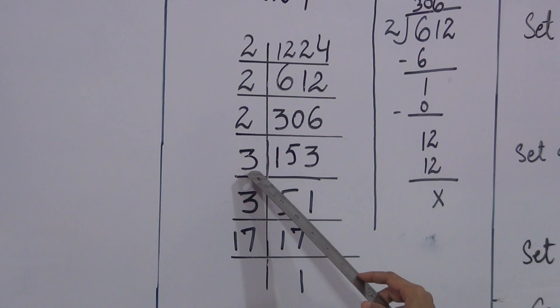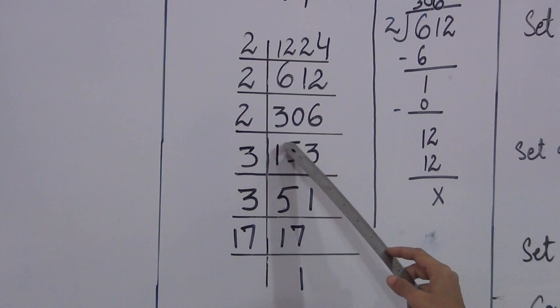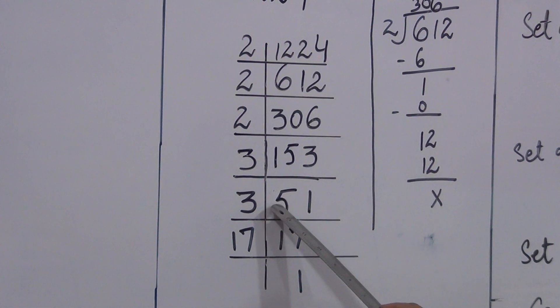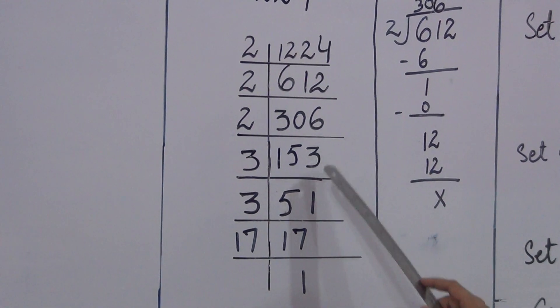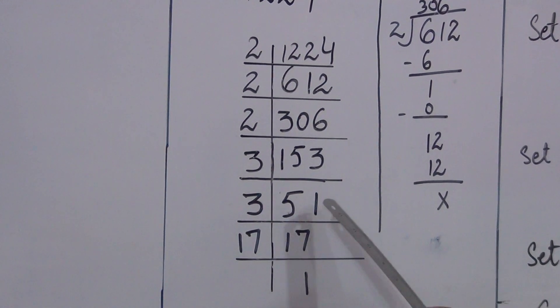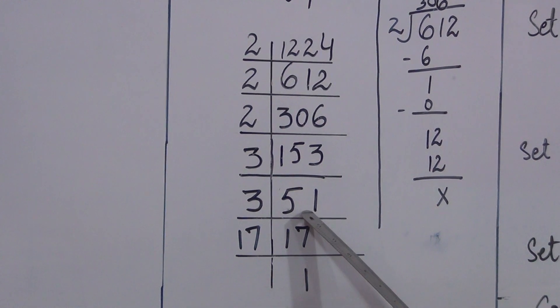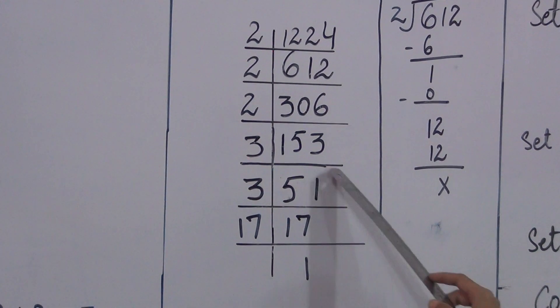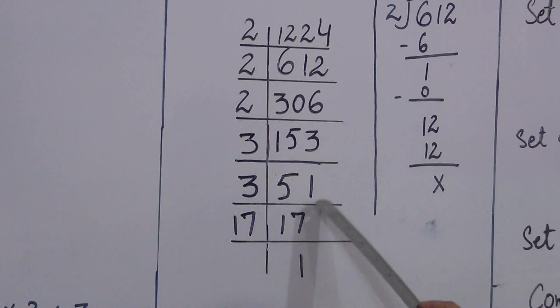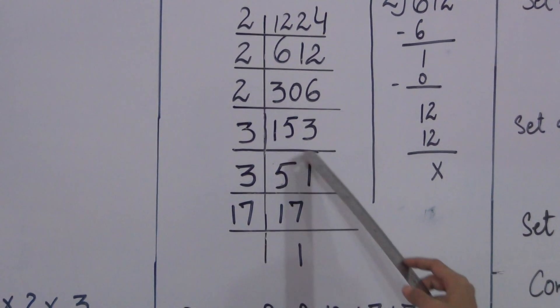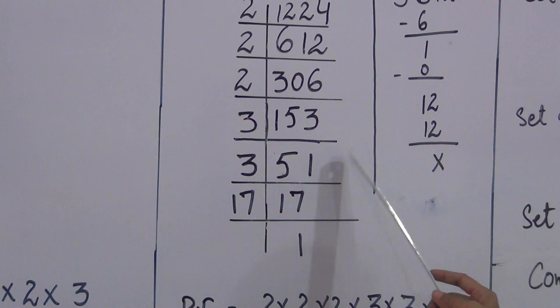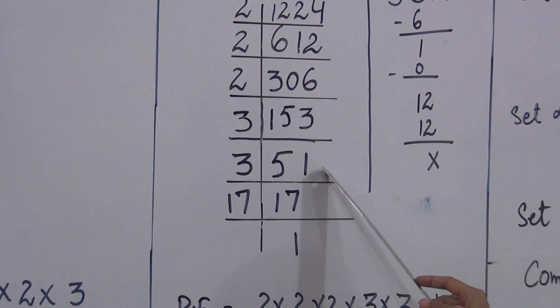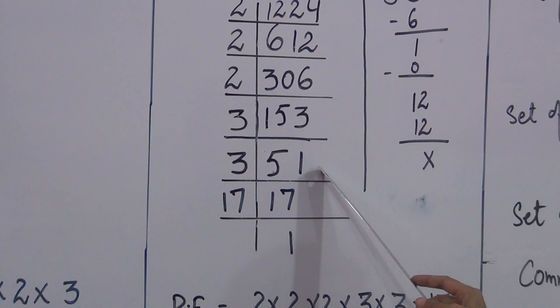Now we divide 153 by 3. 3 times 5 is 15. 3 times 1 is 3. 51 divided by 3 gives 51. The result is 51. 51's last digit is 1, which is not even, so it is an odd number. It is not divisible by 2.